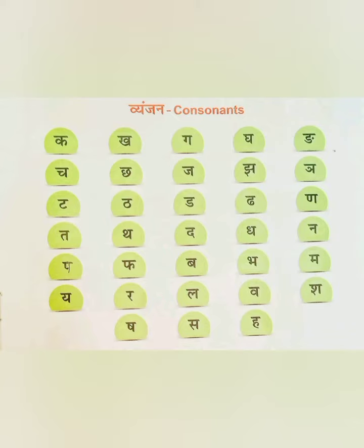Next, Vanjan — consonants: Kh, Kh, G, G, Nya. Ch, Cha, J, Jha, Na.